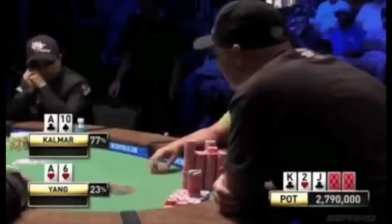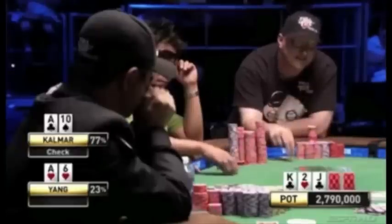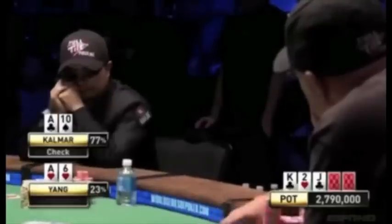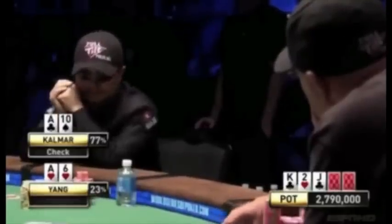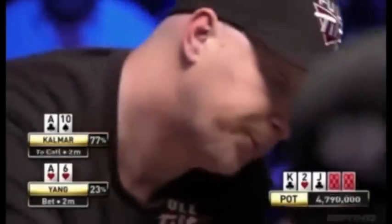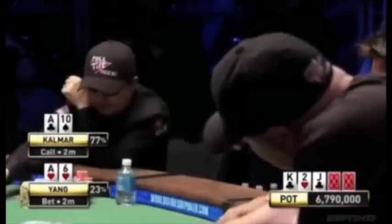This is a hand from WSOP. That's Calmar on the right. And he checks it. Two million. Jerry taking a shot at the pot. And a very confident call from Calmar.